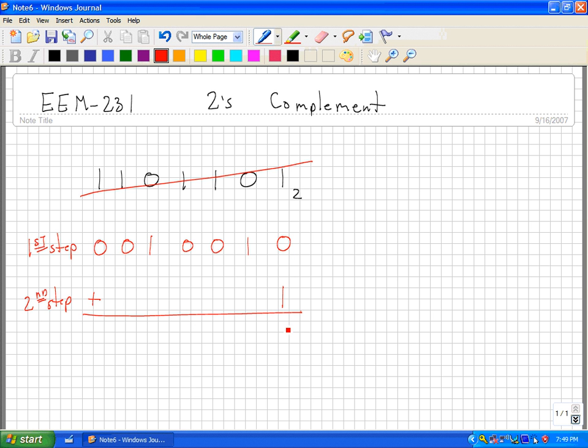So 1 plus 0 is 1, and then we just got 1, 0, 0, 1, 0, 0.